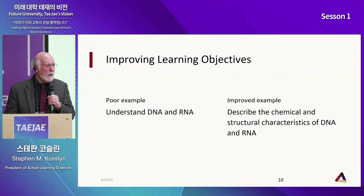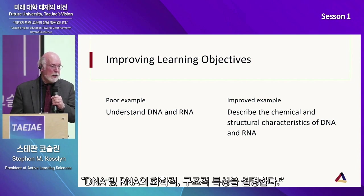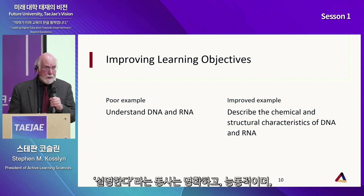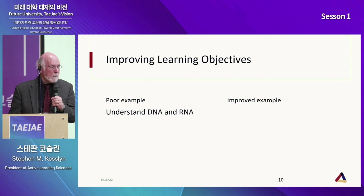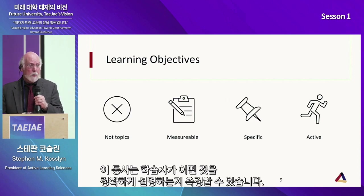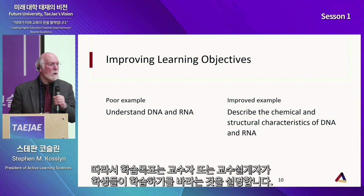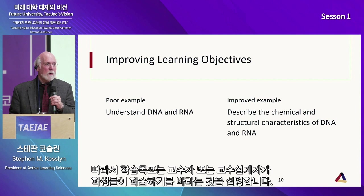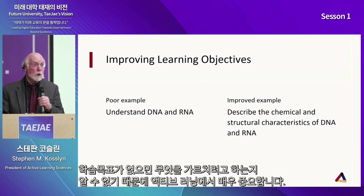Look at this improved version: 'Describe the chemical and structural characteristics of DNA and RNA.' This is much improved. 'Describe' is specific, it's active, it's measurable — we can measure if someone describes it correctly or not — and it's not just a topic. A learning objective describes what the instructor wants the students to learn.